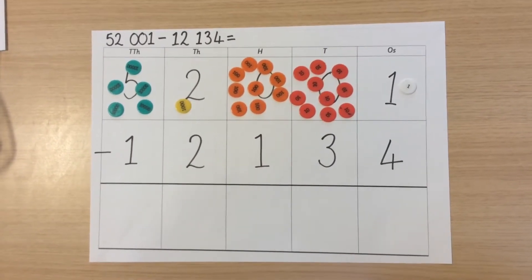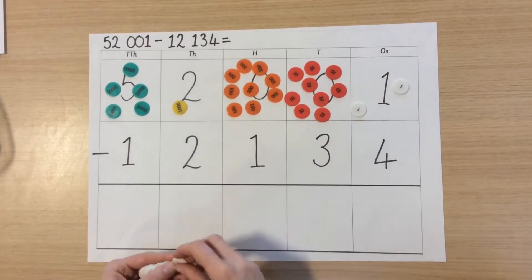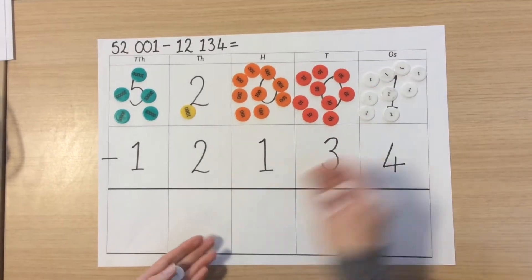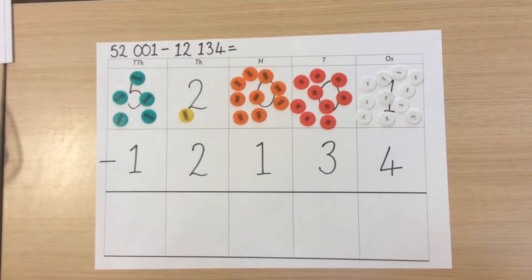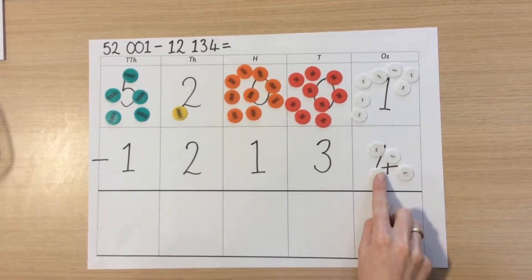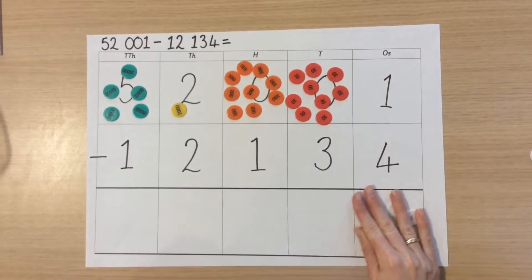This allows us finally to exchange into our ones column. We would exchange one ten for ten ones. This should leave us with eleven ones. Eleven take away four we can complete. We bring four ones into our check box, check them and then we can subtract them. We bring what is left down into our answer box.